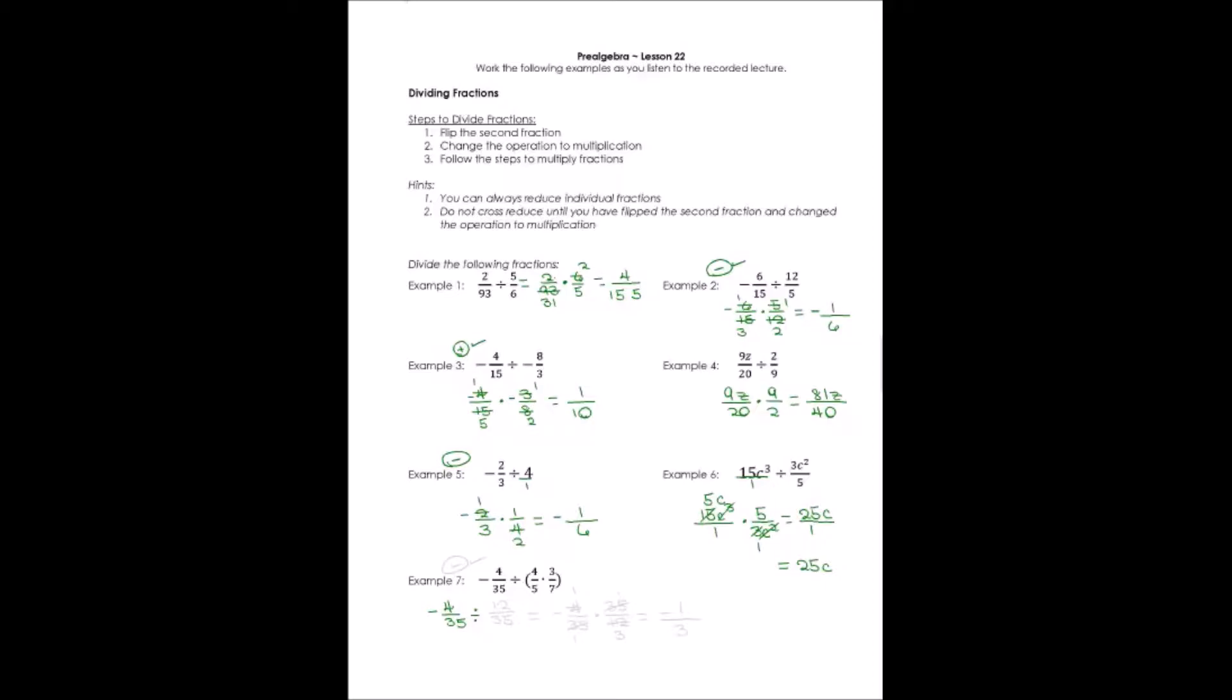I would say 4 times 3 would give me 12, and 5 times 7 would give me 35. Now, at least I'm just dealing with one fraction. Times a negative, looks like I'm going to have a negative answer. A negative times a positive.